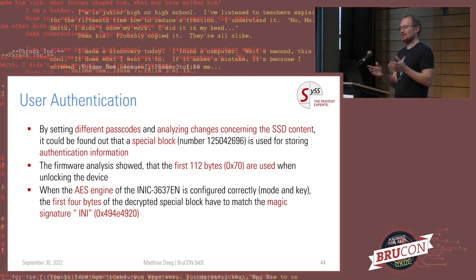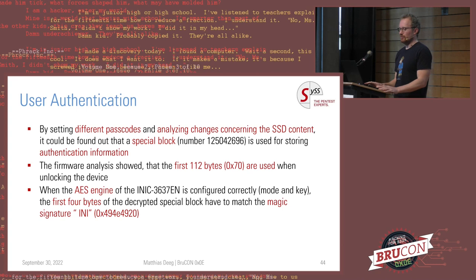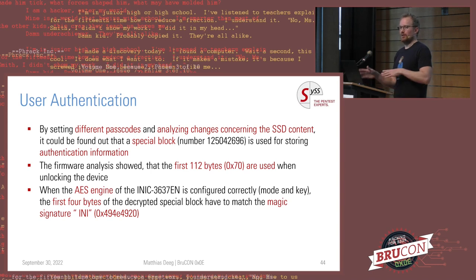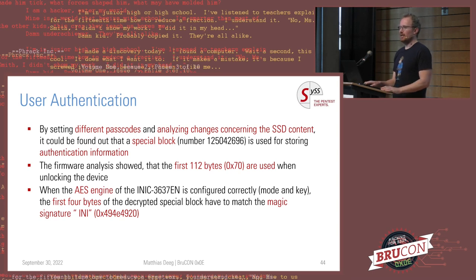The last missing piece: by setting different passcodes on the device and analyzing the SSD content, I found changes in one specific sector — a block storing authentication information in encrypted form. The firmware analysis confirmed that only the first 112 bytes are used for this information, and the AES engine decrypts this block using the key encryption key derived from the PIN sent via SPI. If I decrypt the block correctly, I see the magic signature at a specific offset, confirming the derived key was correct and I found the correct PIN code. The actual AES key is simply the 32-byte SPI payload, with the byte order reversed for each 16-byte block.